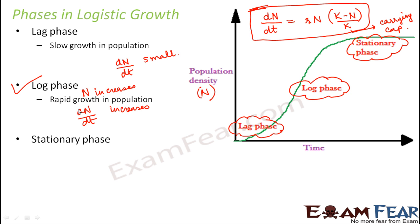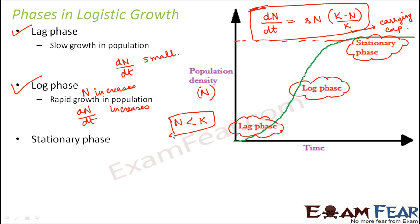Note that in both the lag phase and the log phase, N is less than K. The value of N is increasing with time but is still below K. Because N is less than K in both these stages, there is still scope for population increase, which is why the population continues to grow.